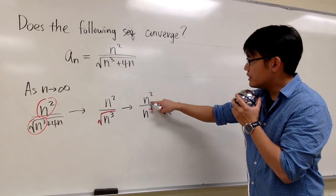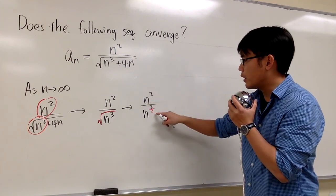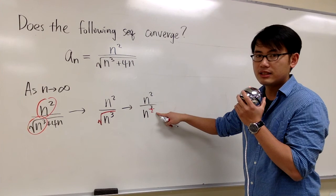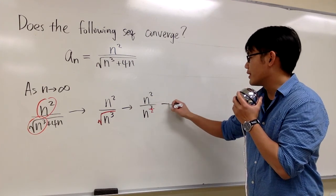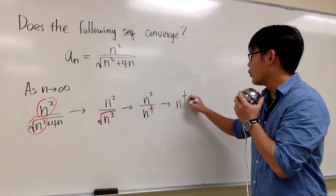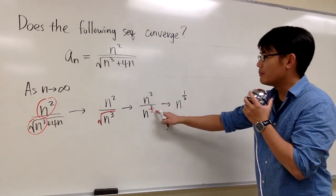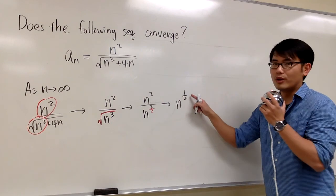When we have n² over n^(3/2), we can subtract the exponents: 2 - 3/2. This is just n^(1/2). That's 4/2 - 3/2, which gives us 1/2.